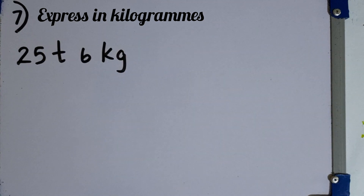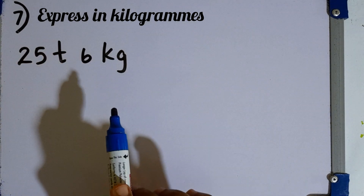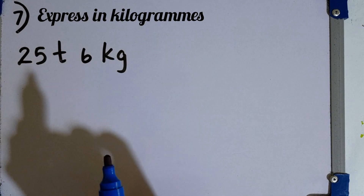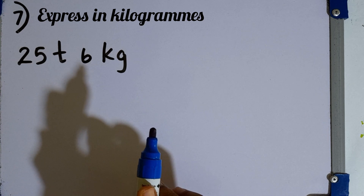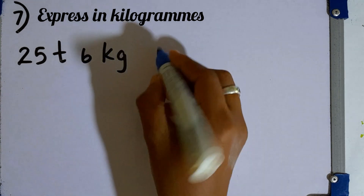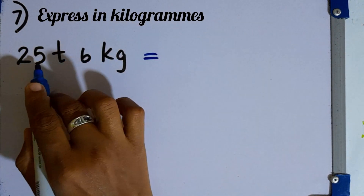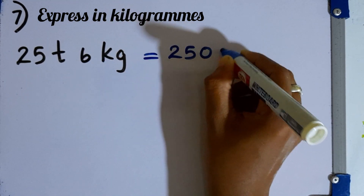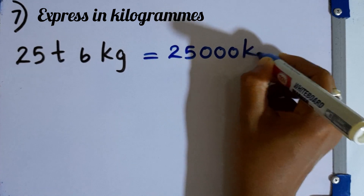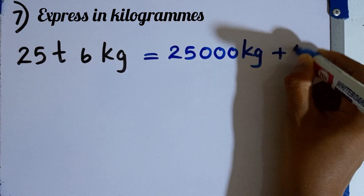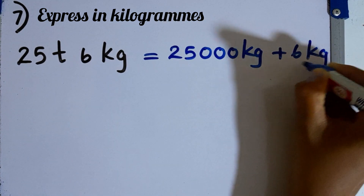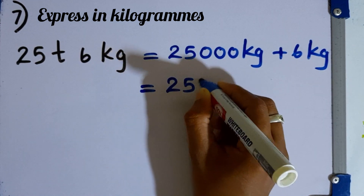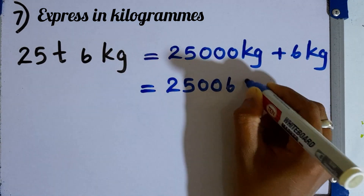Question number 7. What is the relationship between tons and kilograms? One ton equals 1,000 kilograms. So 25 tons 6 kilograms equals 25,000 kilograms plus 6 kilograms, giving a final answer of 25,006 kilograms.